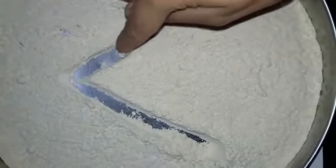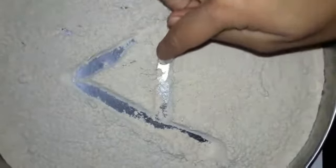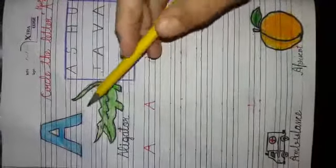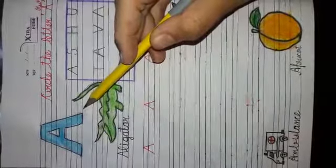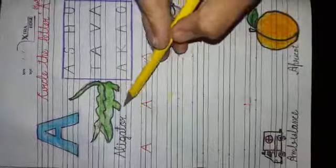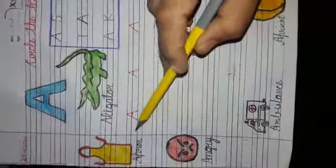Now I have many things for you. See, A says A: alligator, apron, angry, ambulance, apricot, anchor.